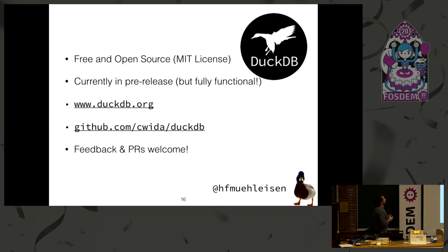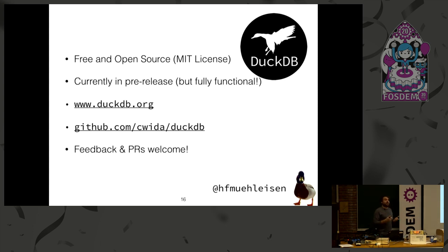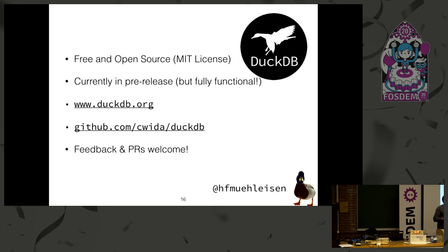DuckDB is free and open source under the MIT license. We are currently in pre-release, which means we may change APIs internally, but it is fully functional — you can run queries and store data. We have a website and a GitHub page where you can file a pull request. We are very interested in hearing feedback. If DuckDB doesn't do something you want, please tell us. If you're more database-inclined, send a pull request with new features or bug fixes. We have a long list of issues tagged 'help wanted' or 'good first issue' in the tracker — good places to start.